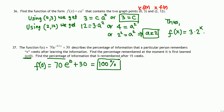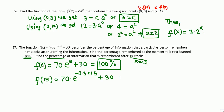Now find the percentage of information remembered after 15 weeks. This function describes the percentage x weeks after learning, so we plug in x = 15. The percentage remembered after 15 weeks is 70·e^(−0.3·15) + 30.